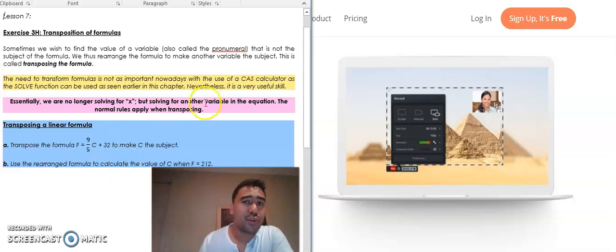This process is called transposing the formula. Now it's not necessarily important nowadays to do this by hand because the CAS calculator can do this with a very functional solve function.